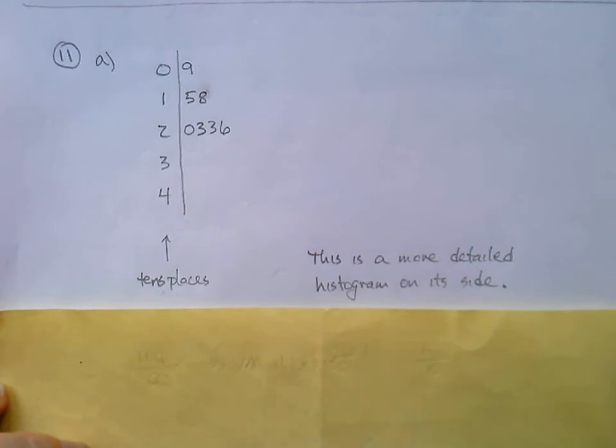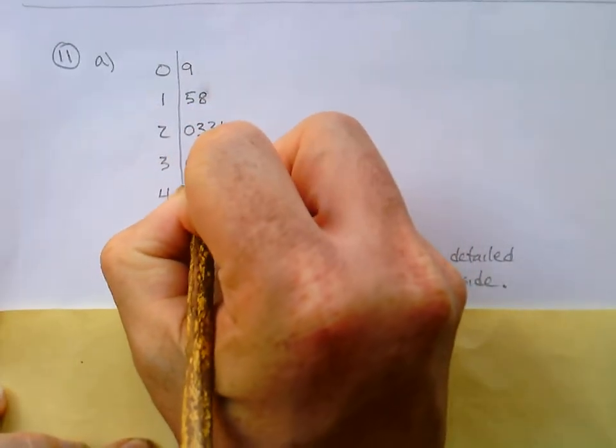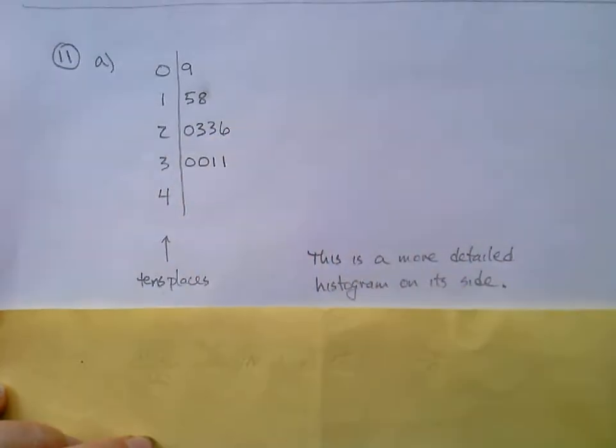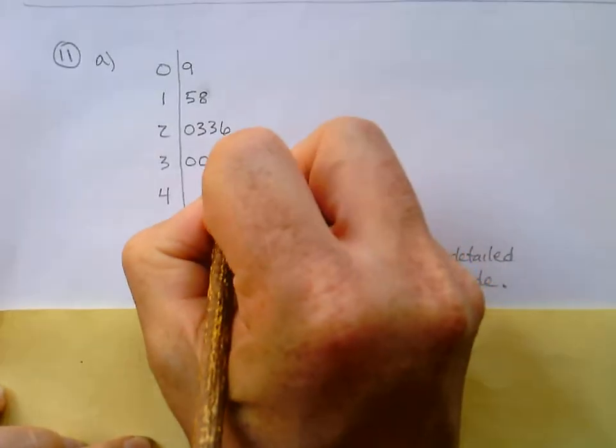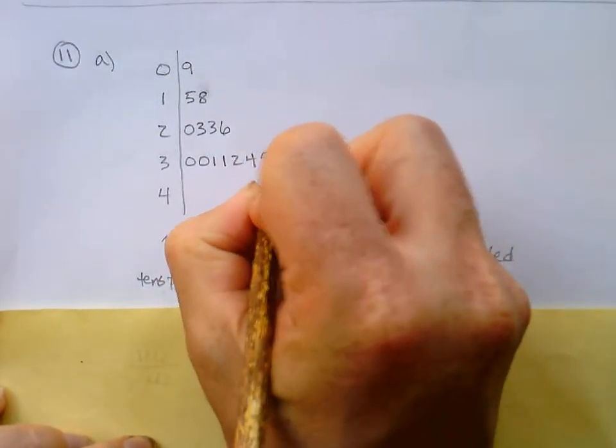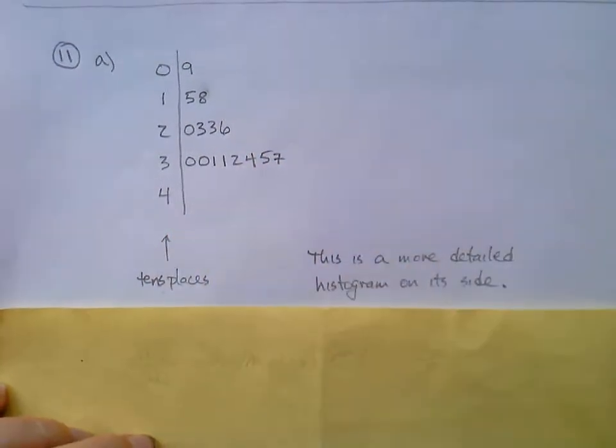And then in the 30s, we had 30. We had a second 30. We had a 1, 31, and another 31. We had 32, 34, 34, 35, 37, 39. 0, 0, 1, 1, 2, 4, 5, 7, 9.